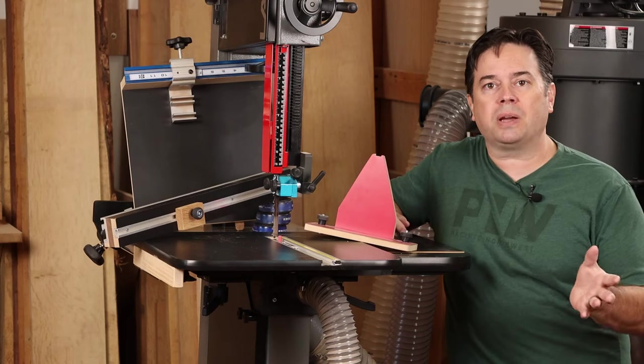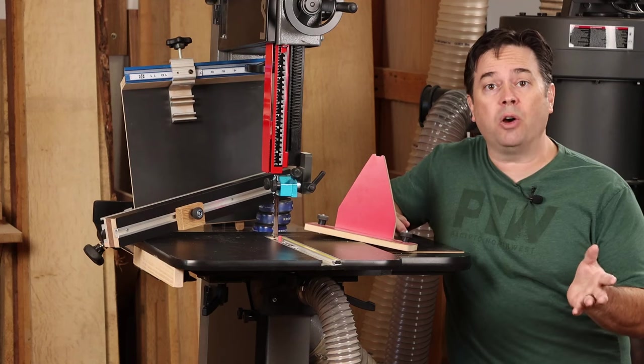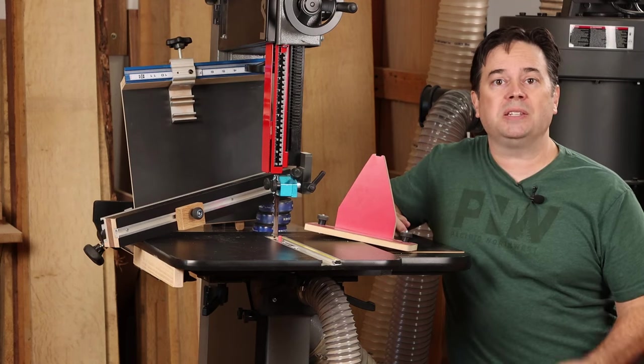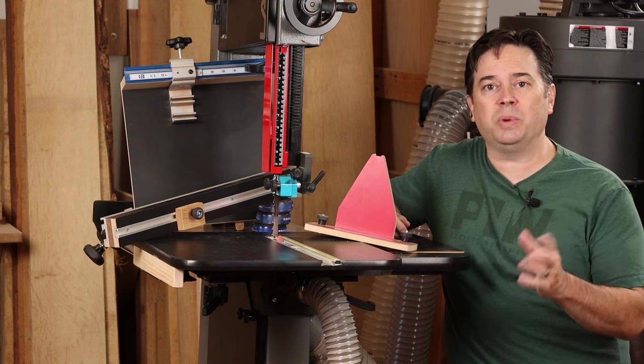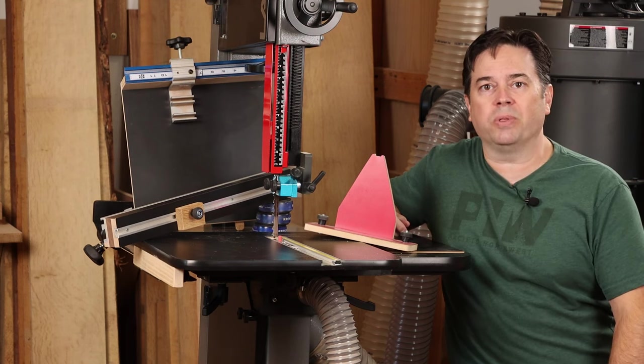The third accessory we'll talk about for your bandsaw is a low fence with adjustable stop block. And as simple as this is, this has got to be my most used accessory for the bandsaw.